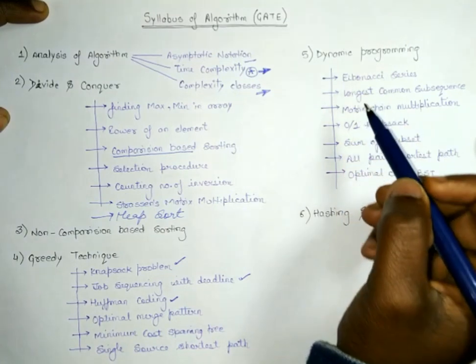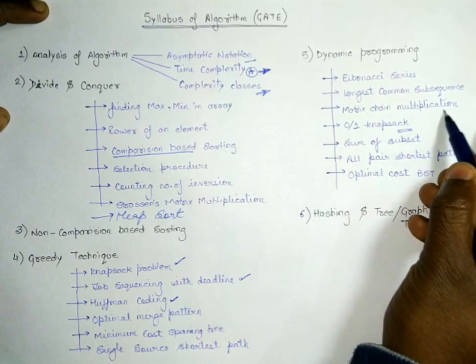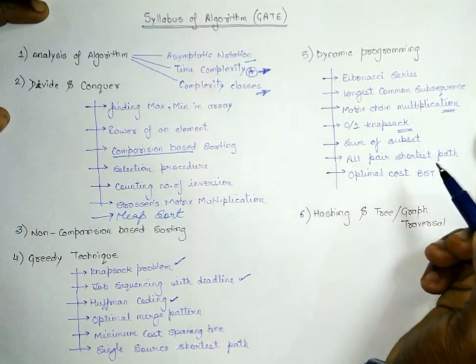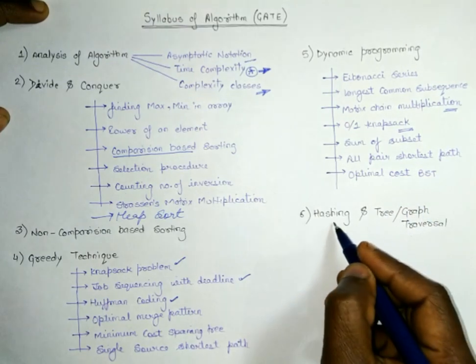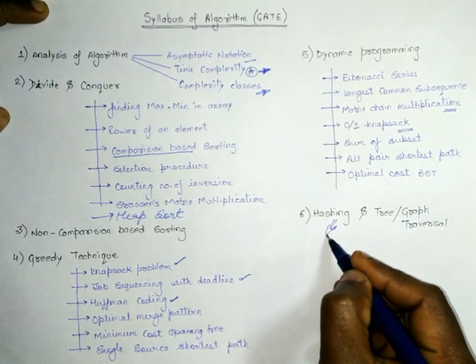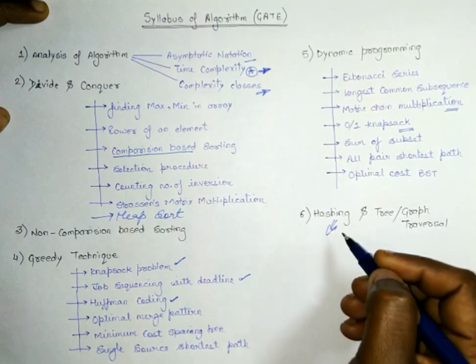The next chapter which comes is dynamic programming. In dynamic programming, 0/1 knapsack is important, and matrix multiplication is important - these two are the most important. The last comes is hashing and tree traversal. A few questions have been asked in previous years on hashing and tree traversal as well.